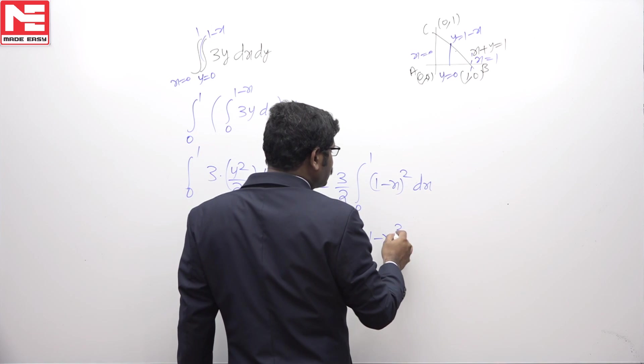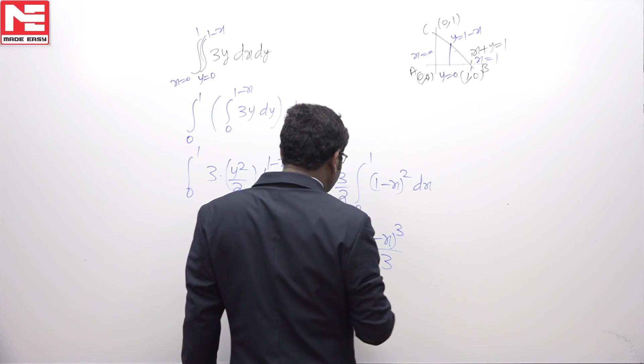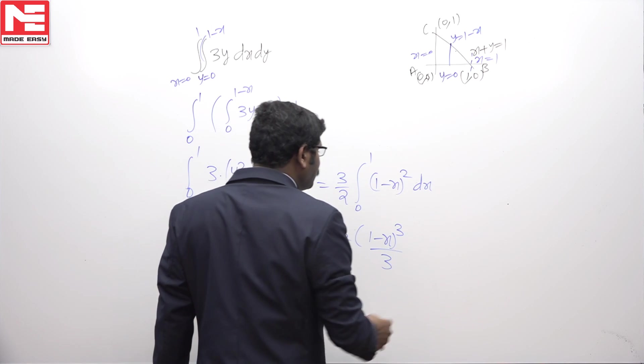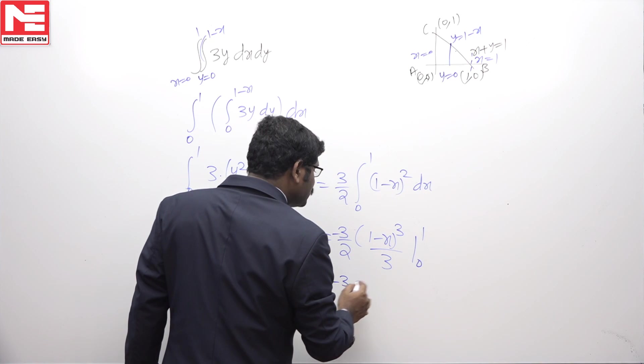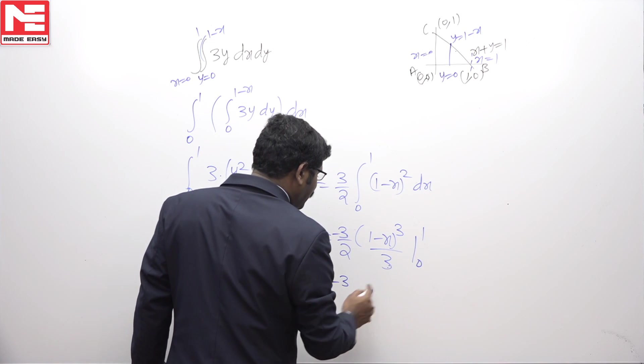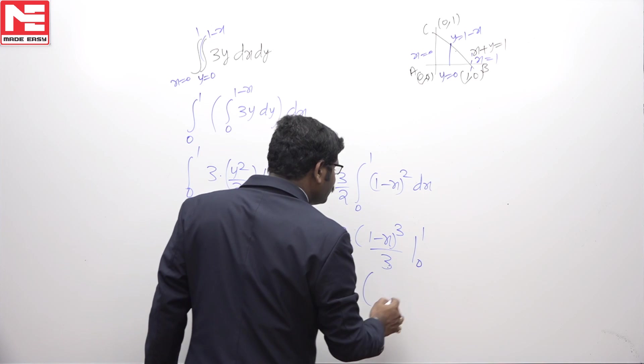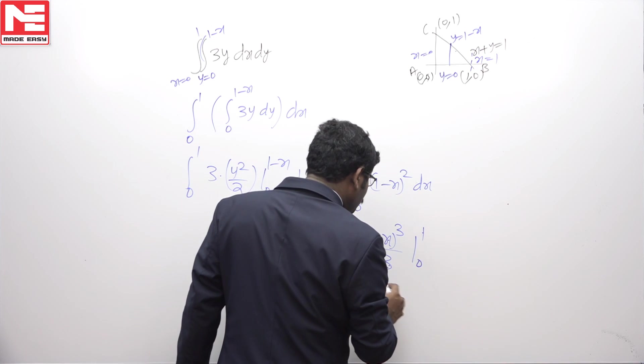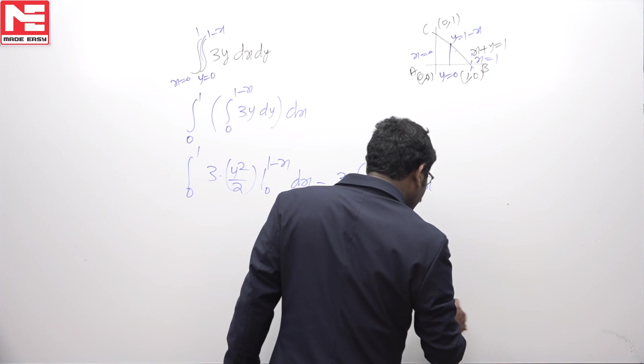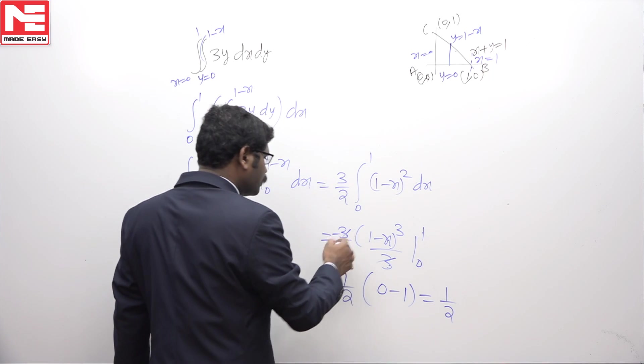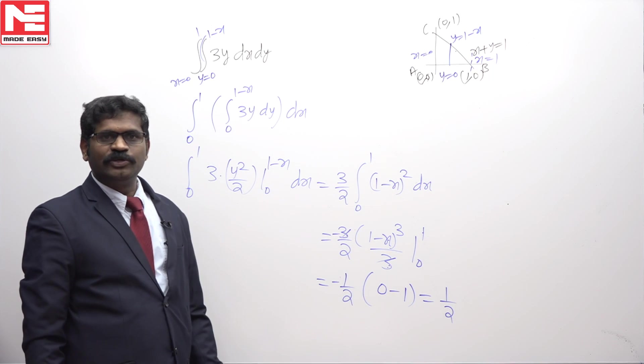That is minus 3/2 times (1 minus x) cubed over 3 times minus 1, which I'm writing here. That is minus 1/2. The upper limit gives 0, the lower limit gives 1, so finally the answer is 1/2.